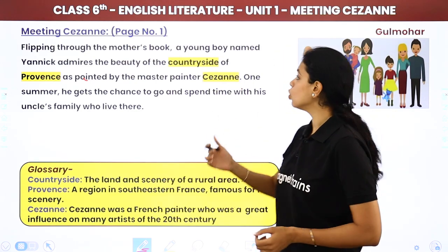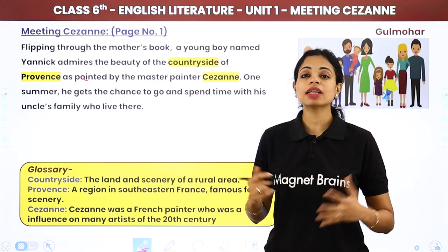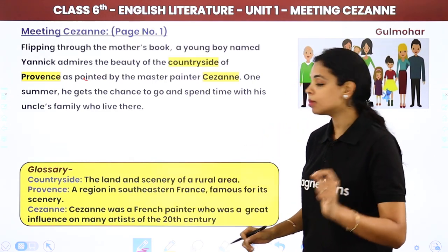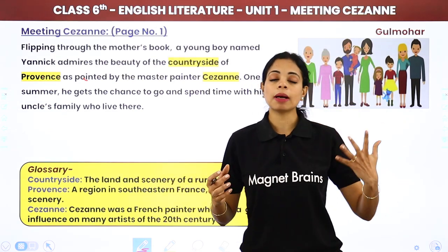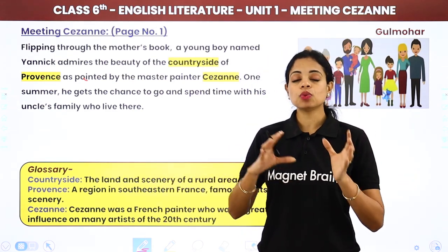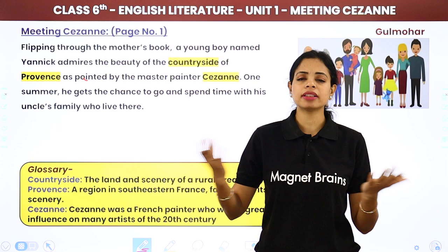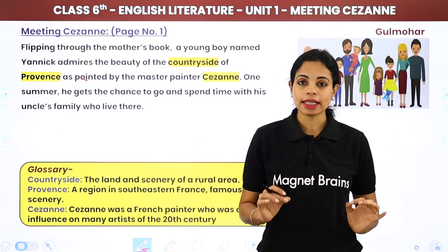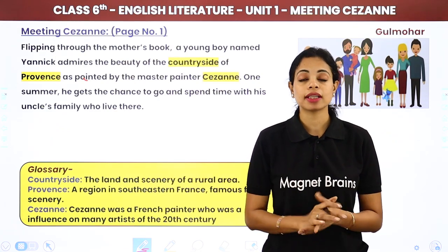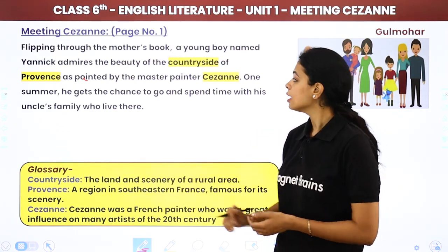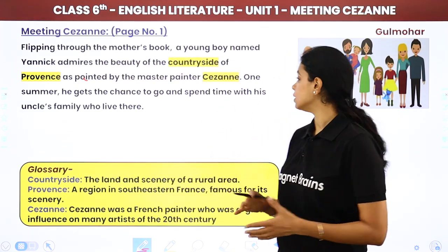When Yannick was flipping through his mother's book, he admired the pictures of Provence's countryside — the rural, scenic landscape of trees, rivers, and mountains. Those pictures had been painted by the master painter Cezanne, and Yannick found them very beautiful.